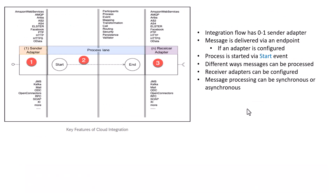That is the key concept you should be aware of when working with iFlows. The iFlow itself can be triggered in a couple of ways. You can have zero or one sender adapter — for example, an HTTP request or a SOAP request. The SOAP or HTTP request triggers the iFlow via the start event, and then you can have any number of processing steps before it goes to the end. At the end, if it is an in-out message, the out message is sent back to the sender; otherwise it is completely ignored.